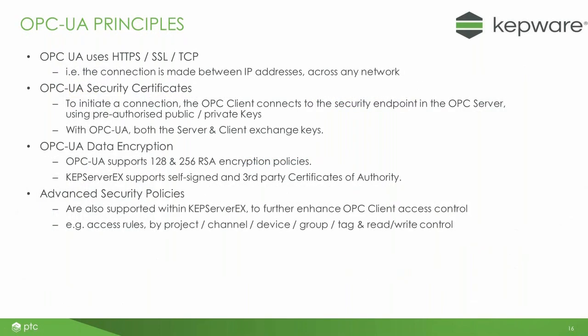OPC UA covers all the modern standards — SSL, RSA encryption, and AES. You can use certificates from an authorised security company like VeriSign, but you can also use self-created certificates from within the KEPServer software. On top of that, you can apply further security using a feature within the KEPServer software called security policies. There's a webinar later in the series about security policies, which gives you an extra level of security on top of what's already within OPC UA.